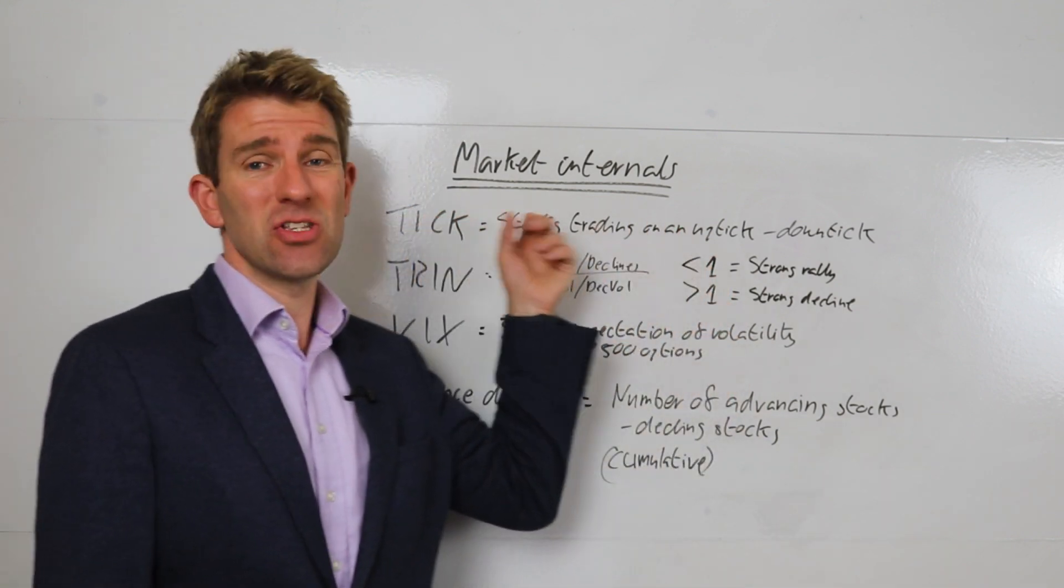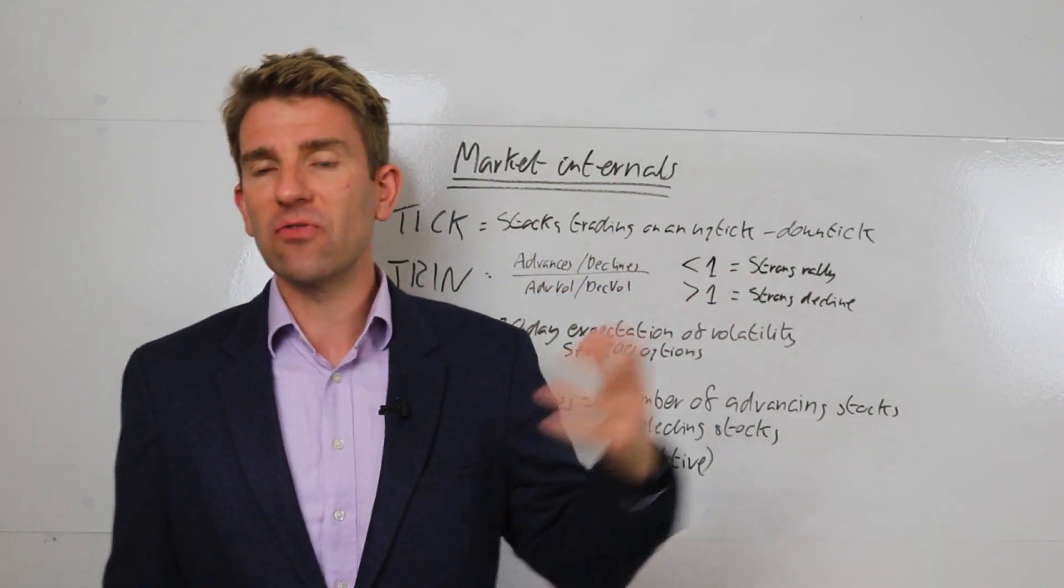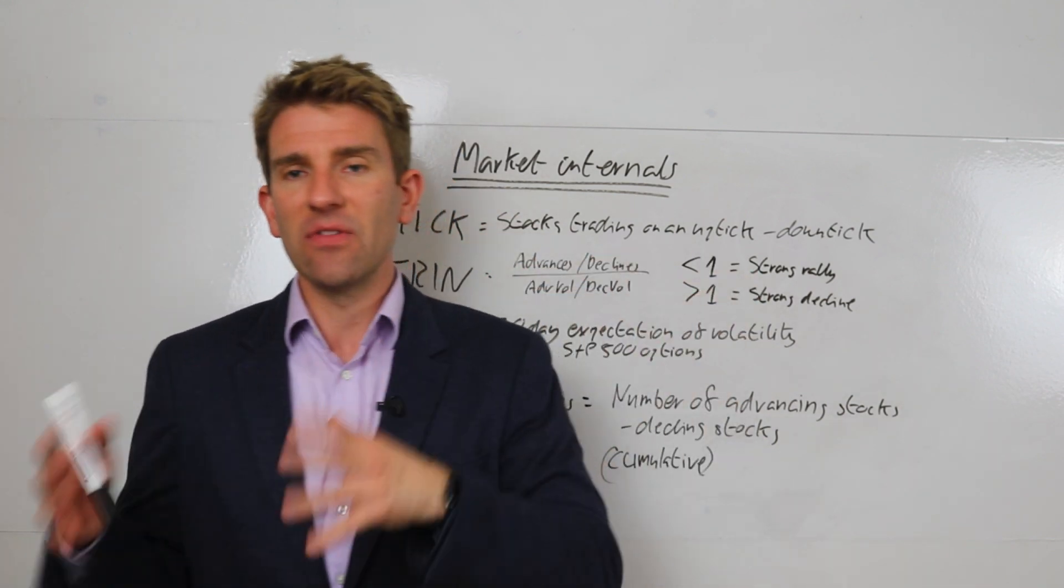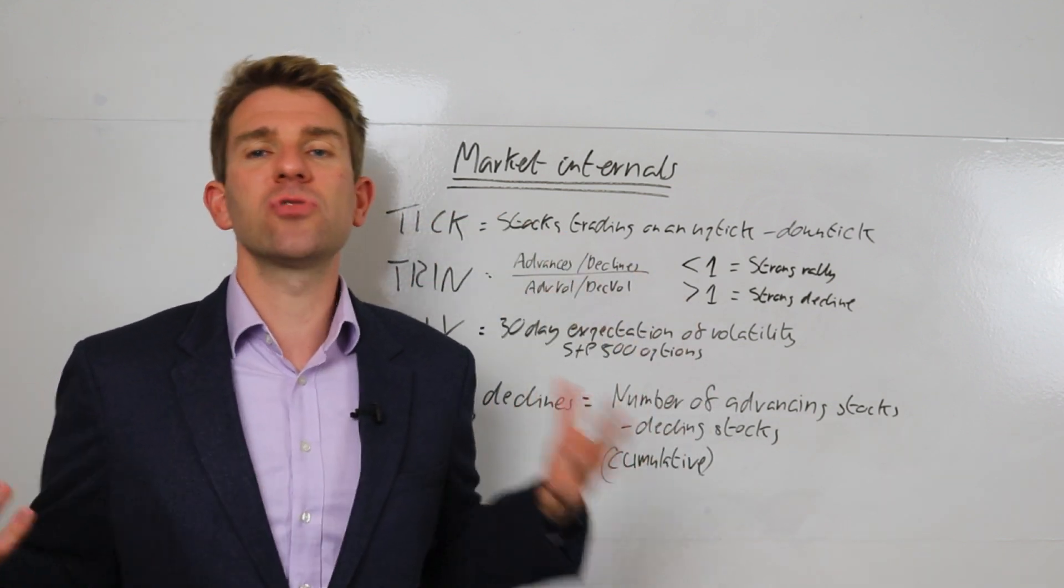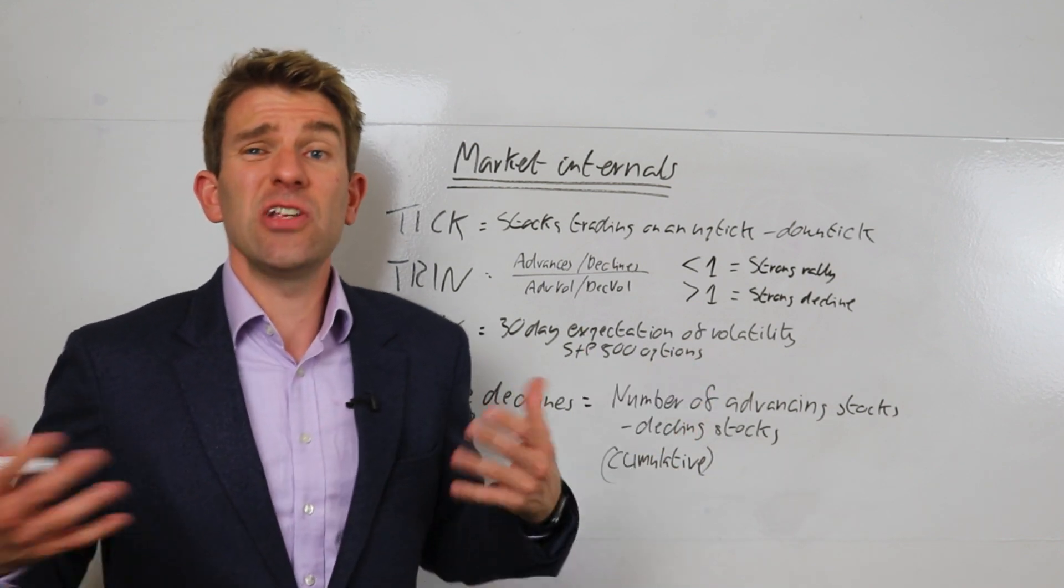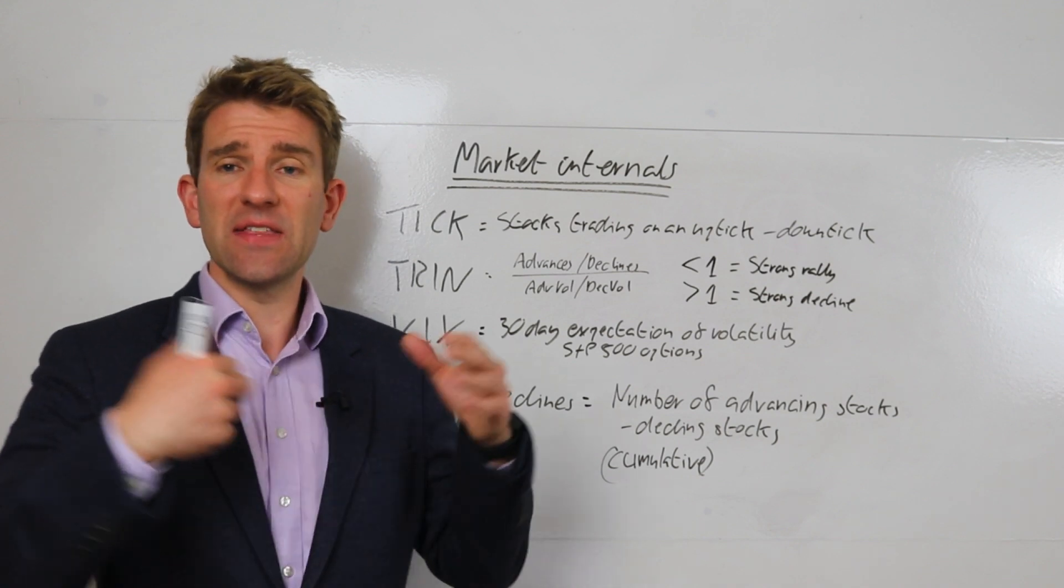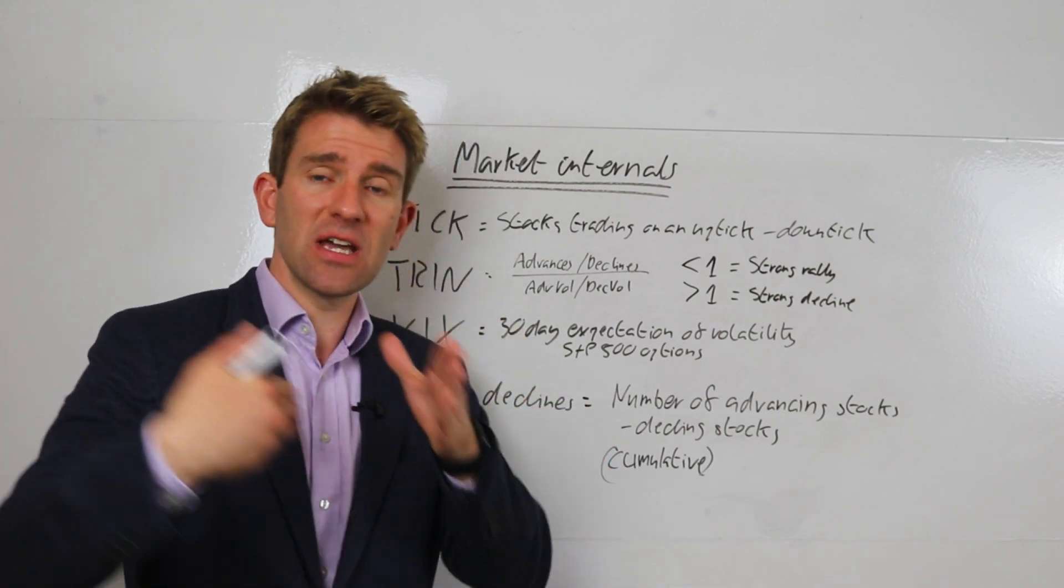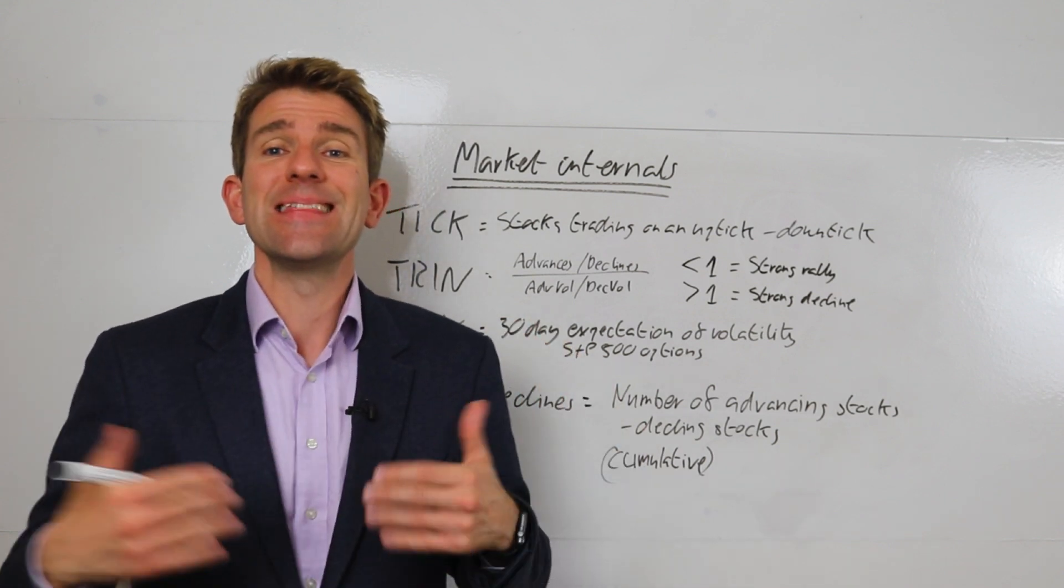It's worth noting that this is the New York Stock Exchange only. There are other TICK indexes called different things for the NASDAQ, for the Dow, and others. This is the best one in my opinion because it's broad enough to encompass most of what you need. It's not so broad that you're having too much data, and it just works very well. So if you take the number of stocks trading on uptick minus the downticks from the upticks, then you're left with your TICK reading.